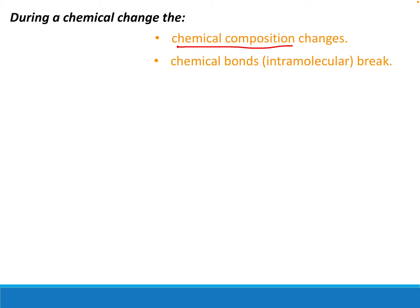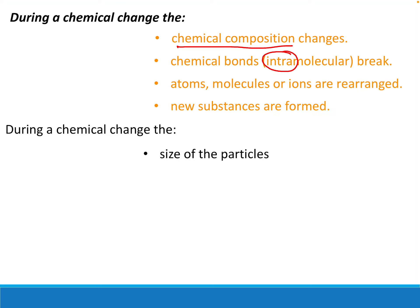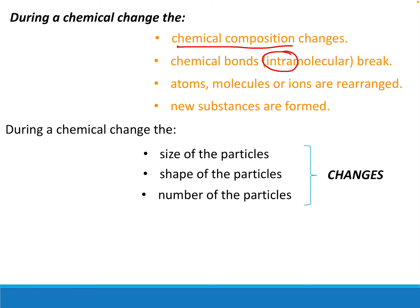Chemical bonds - 'intra' means inside the molecule. We break bonds and then atoms, molecules, or ions are rearranged - they change who they're bonded with, changing partners. When the new substance is formed it has a different shape and a different number. What we need to remember is that the size, shape, and number of particles all change. The atoms themselves don't change shape or size, but how they're combined with each other changes.